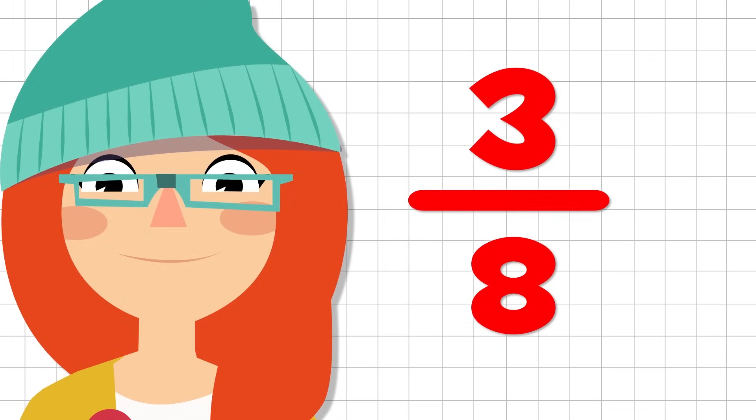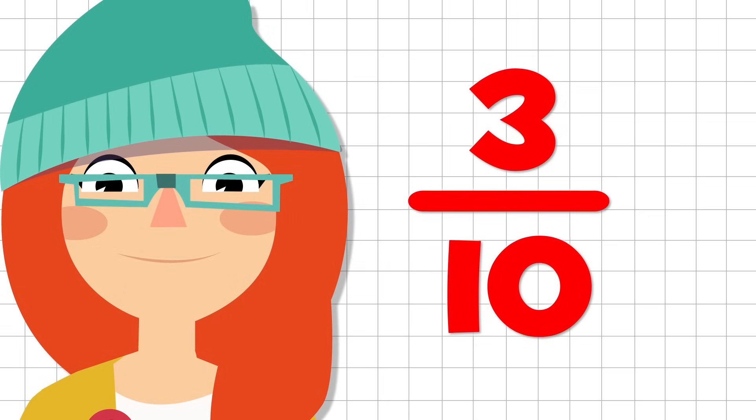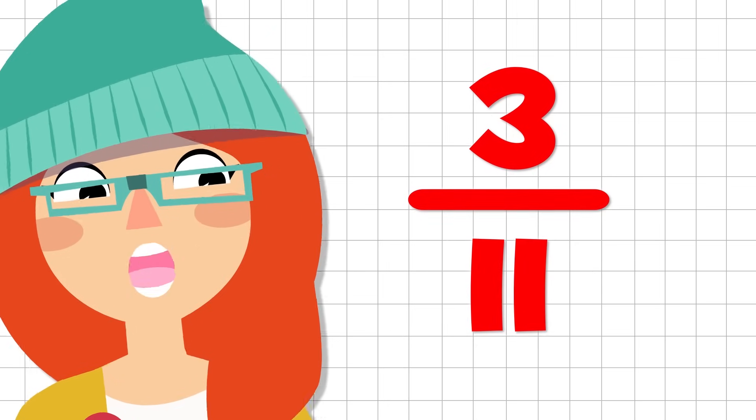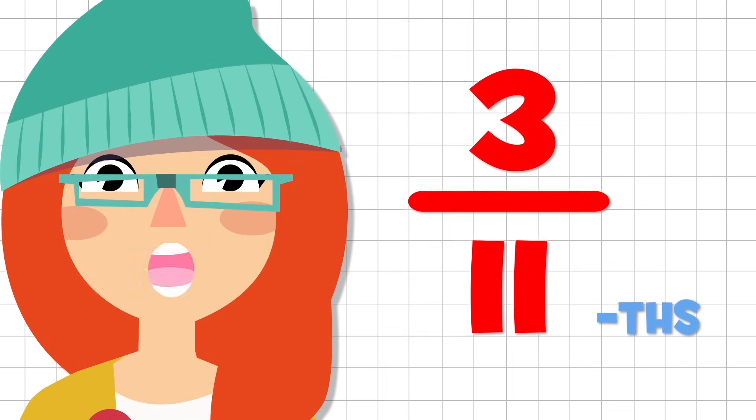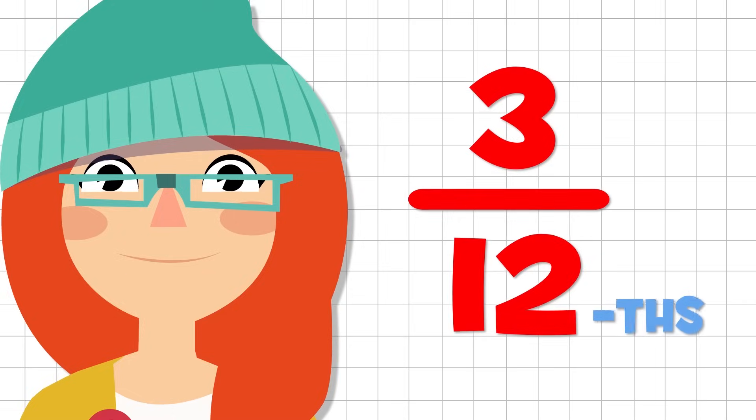If it's a nine, we say ninths. And if it's a ten, we say tenths. Easy, right? From eleven onwards, it's the same as before. Just keep adding the suffix t-h-s. So if the denominator is an eleven, we would say elevenths. If it's a twelve, we would say twelfths. And so on. And so forth.